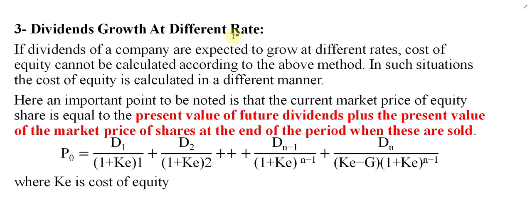If you remember, the first method was the dividend yield method, meaning whatever return we receive now, we will receive in the future as well. The second method was dividend yield plus growth, meaning you receive the current rate plus there is growth in the dividend, but the growth rate was constant. In this third method, there is growth in the dividend but the growth is at different rates — in different years the dividend grows at a different rate.